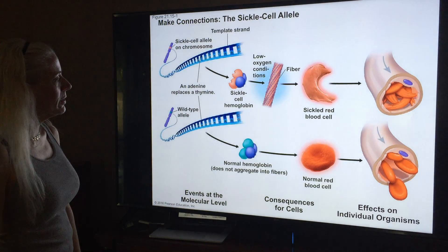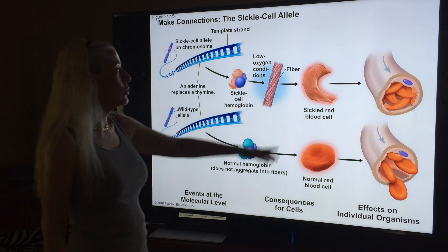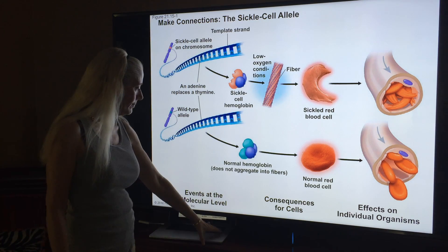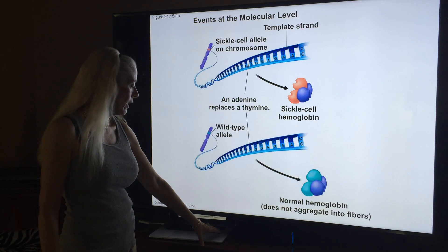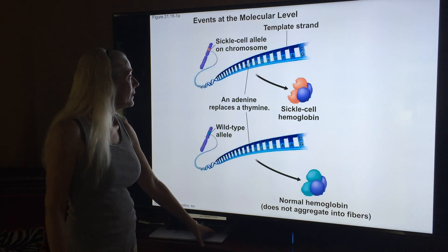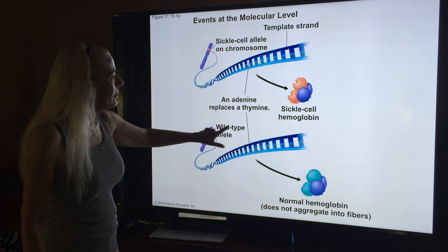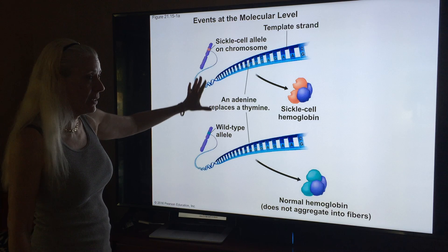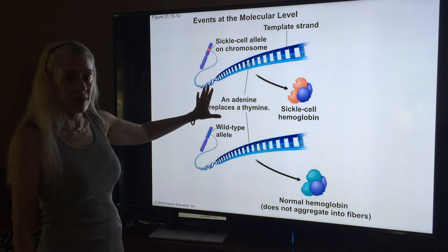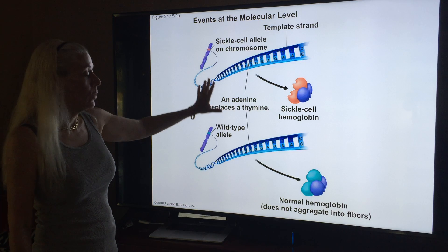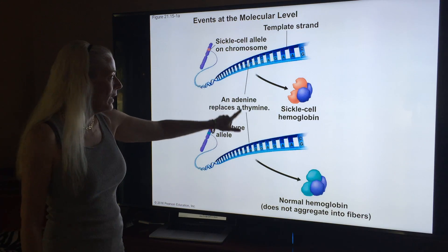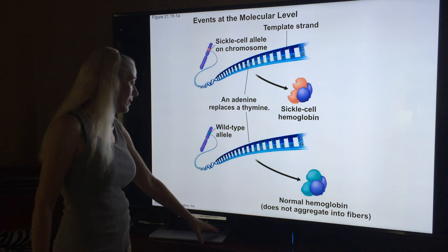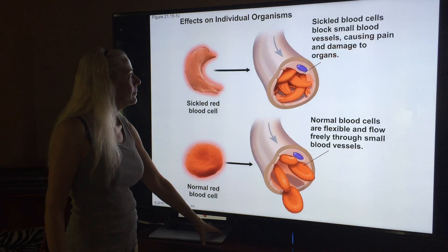Looking at the diagram of sickle cell — it shows the one nitrogenous base that's changed. Just one: they're switching an A for a T, and that makes all the difference. That single change in the DNA leads to the sickling of red blood cells.